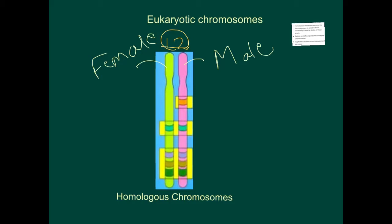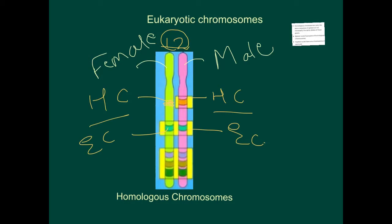Let's say this is a gene for hair color. Then at this particular locus, you will have a gene that again codes for a polypeptide resulting in the property of hair color. Similarly, let's say there is a gene for eye color. At this particular locus on the other homologous chromosome, you will also have an eye color gene. The sequence of genes is the same, and they are at the same location — the hair color gene is present at the same location in both structures.